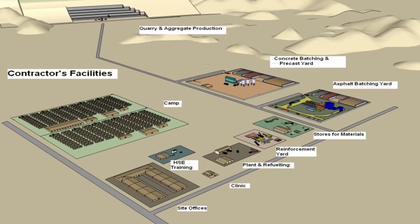Temporary site facilities comprise: accommodation camp, offices, plant and equipment yard, fuel farm, training facility, stores, and concrete batching yard.